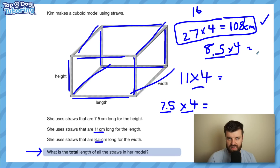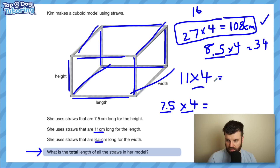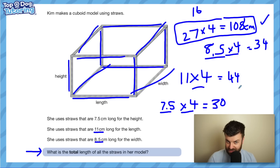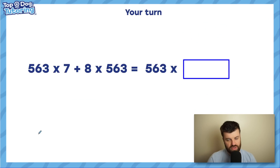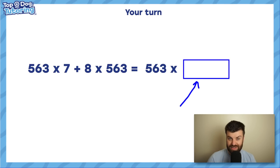You'd still get the right answer the slow way — 8.5 times 4 is 34, 11 times 4 is 44, 7.5 times 4 is 30, and 30 plus 44 plus 34 is 108. But instead of three separate multiplications by 4, just do it straight away: 27 times 4. Double 27 is 54, double again is 108 centimetres. It's as simple as that. I really hope you found this useful. Let me know in the comments below what number would go in this box — use what we've talked about today. Like, subscribe, share the video with someone who'd find it useful, and we'll be back soon with more videos.